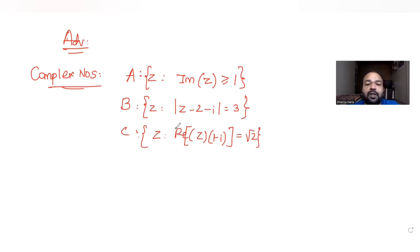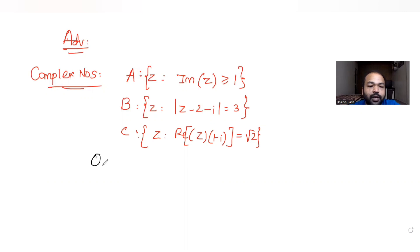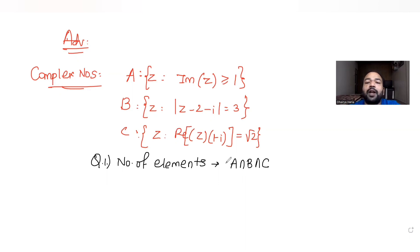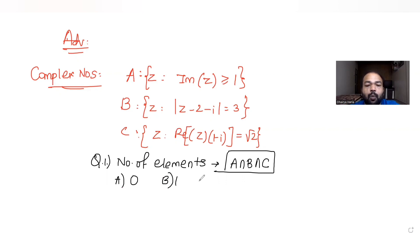These are the three sets of complex numbers. We need to find the region for all three of them, and there are two questions pertaining to this data. The first question asks: how many elements are present in the set A intersection B intersection C? The options given are zero, one, two, and infinity.